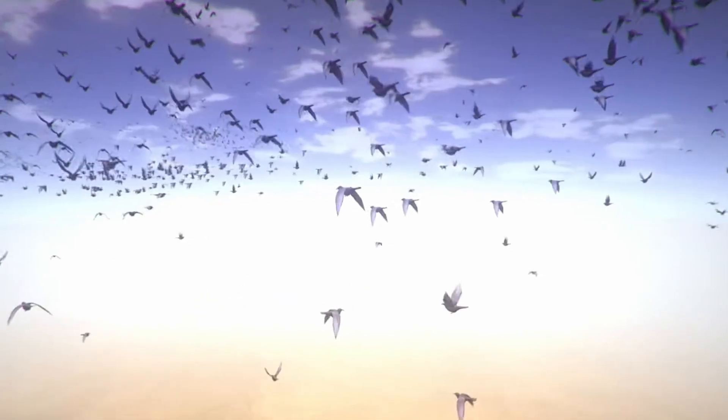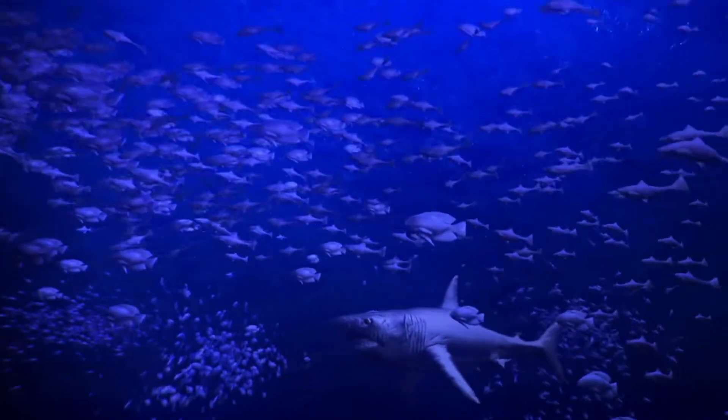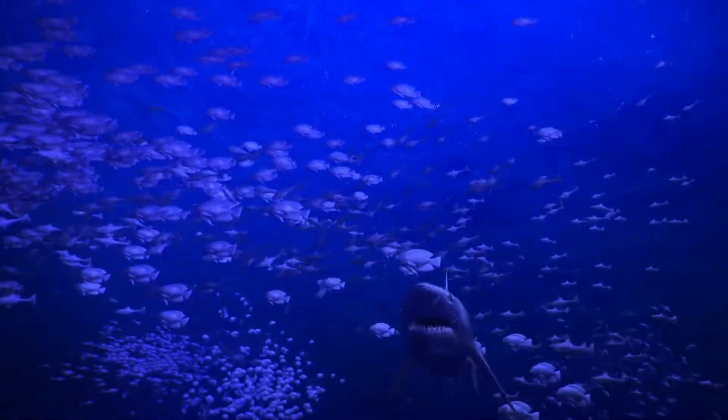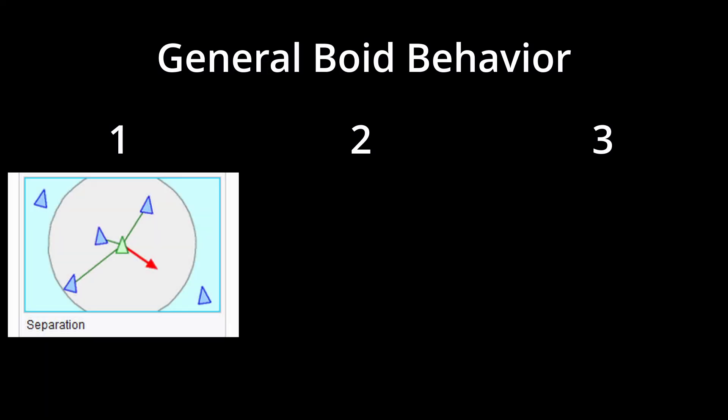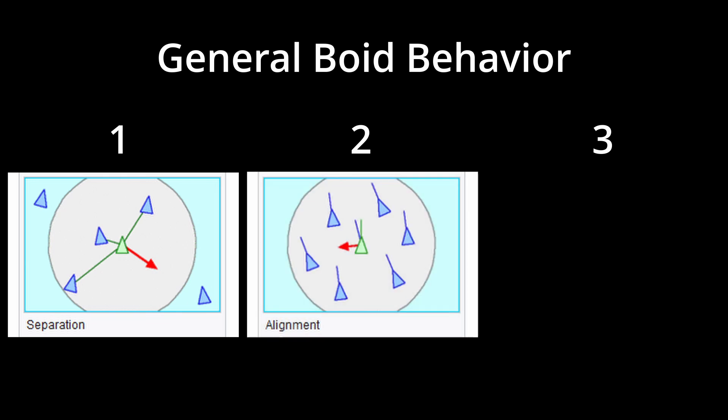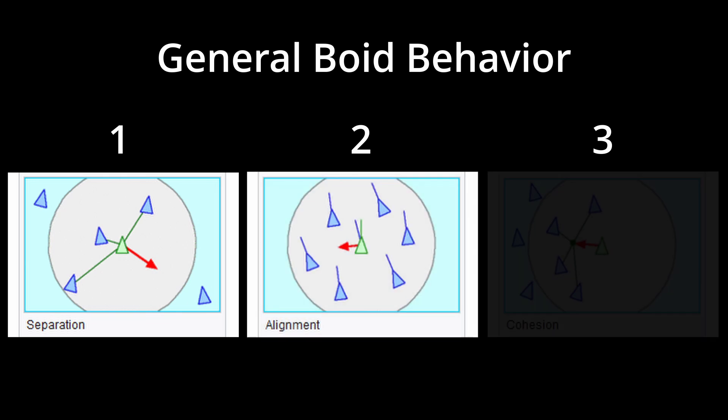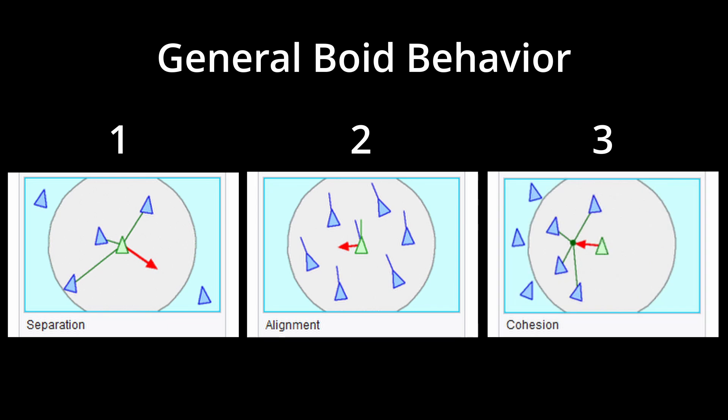Normally Boids are used for large groups of flocking birds, fish, or other animals and follow three basic rules. Separation: steering to avoid crowding local flockmates. Alignment: steer towards the average heading of local flockmates. And Cohesion: steer to move towards the average position of local flockmates.